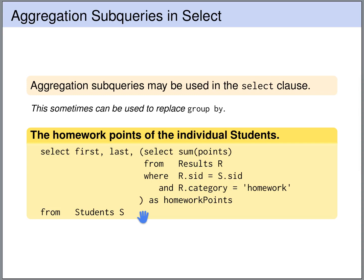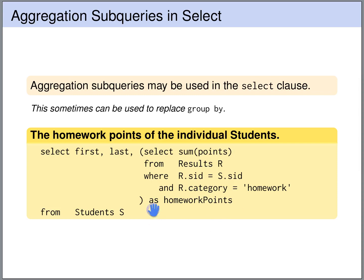Here the same problem is solved without GROUP BY, using an aggregation subquery in the SELECT clause. We are querying the students table, and for each student we output a row with the first name and last name. This value is obtained by querying the results table, selecting all the results that belong to the student currently being looked at, filtering for homework results only, and then taking the SUM of all the points — the sum of the homework points for the current student. Finally we give this column the name 'homework points'.